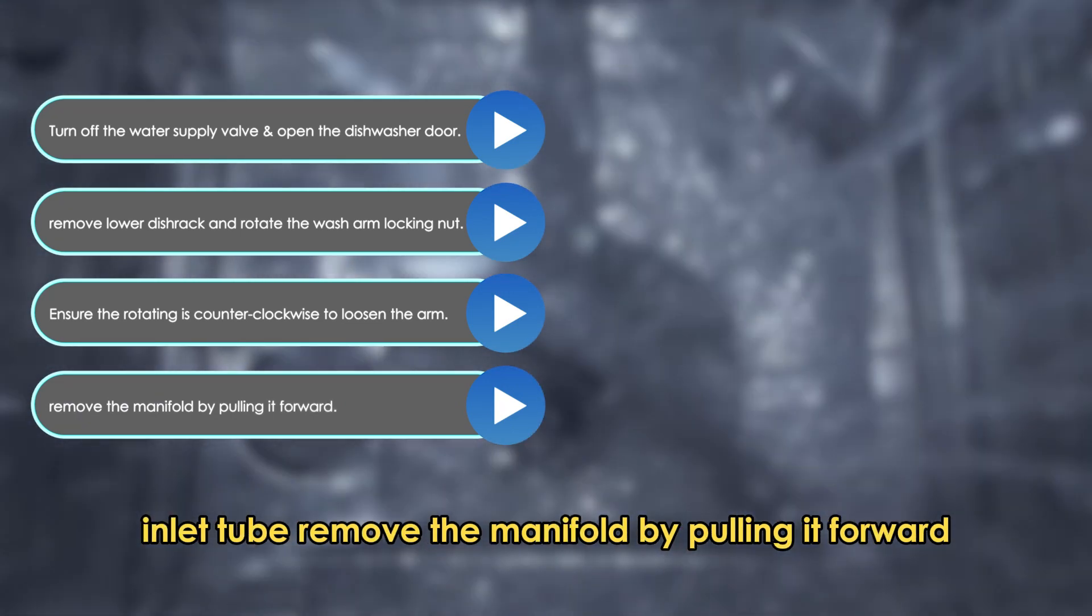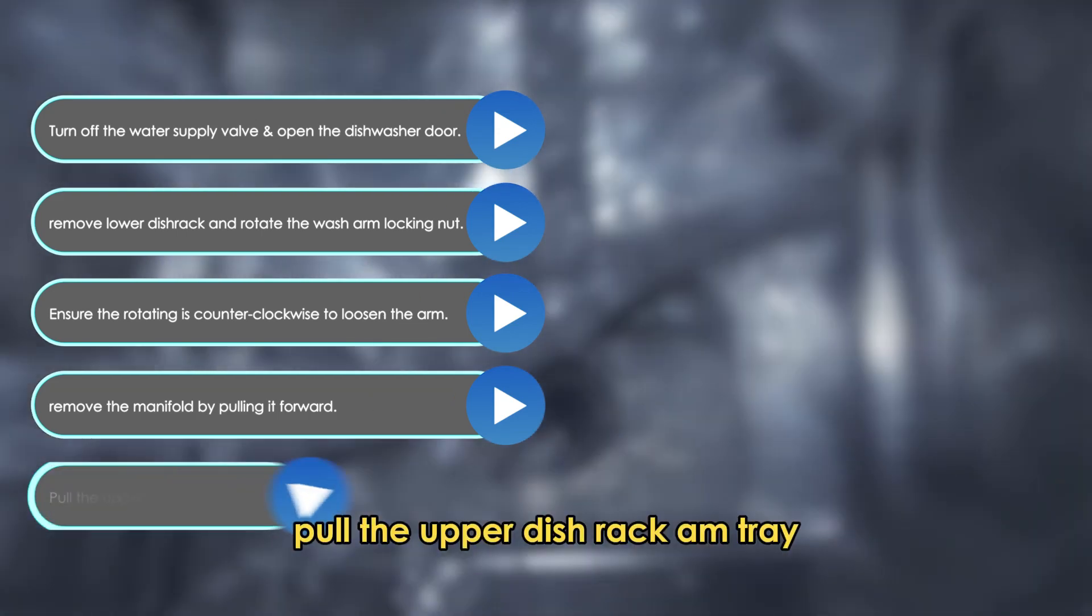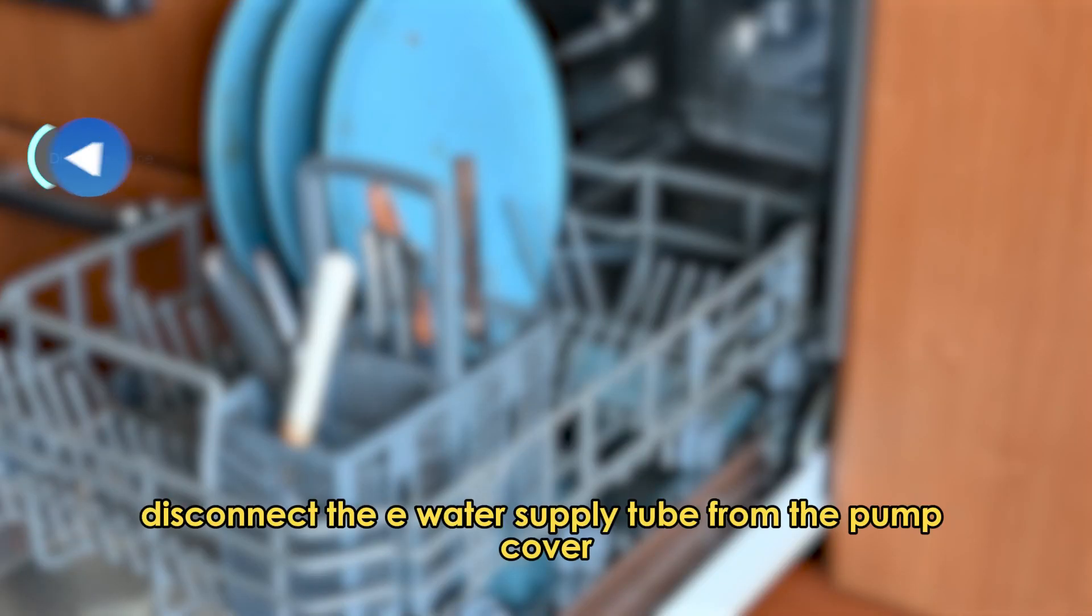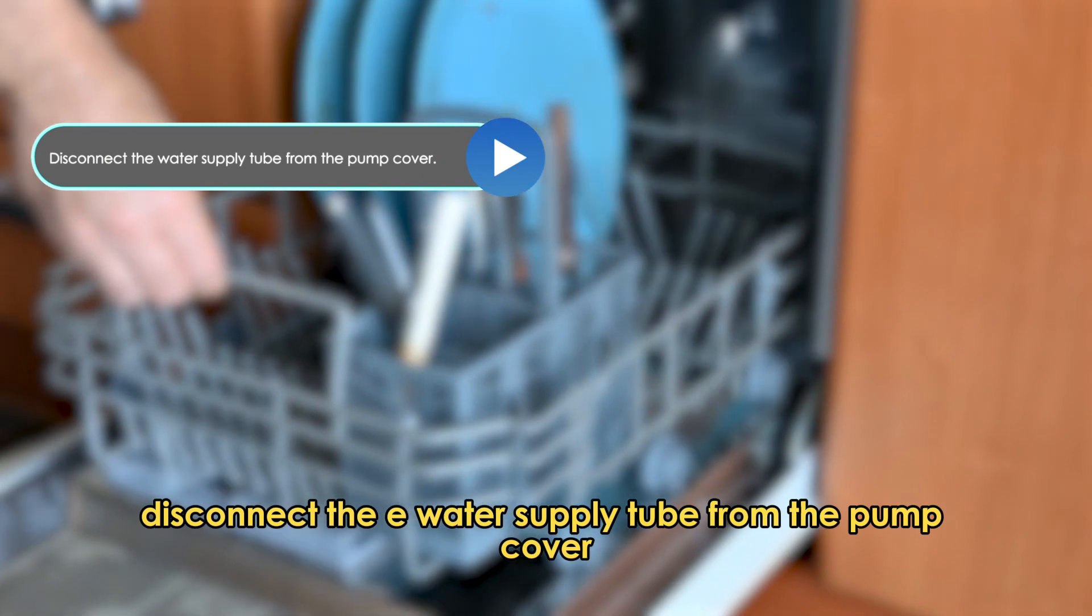remove the manifold by pulling it forward. Pull the upper dish rack and tray. Disconnect the water supply tube from the pump cover.